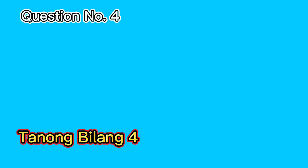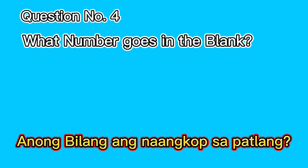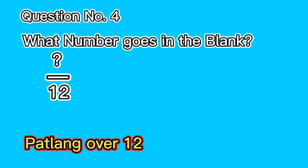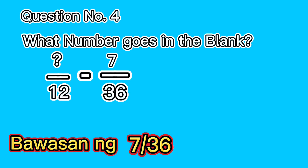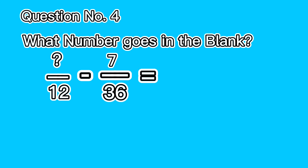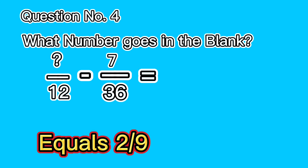Question number 4. What number goes in the blank? Blank over 12, minus 7 over 36, equals 2 over 9.